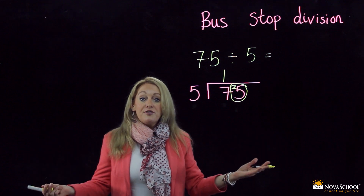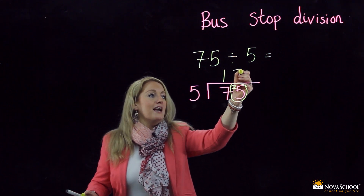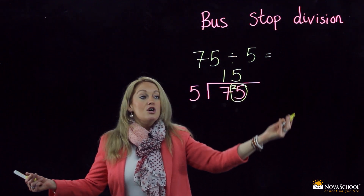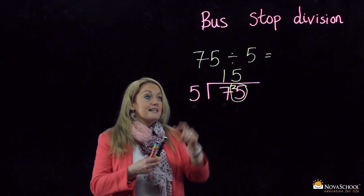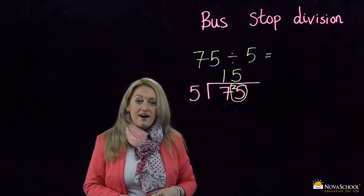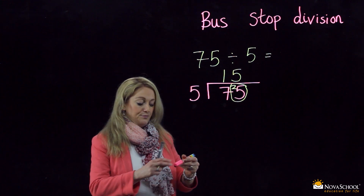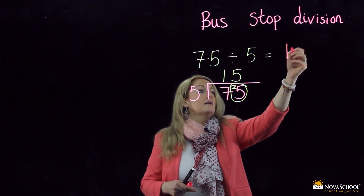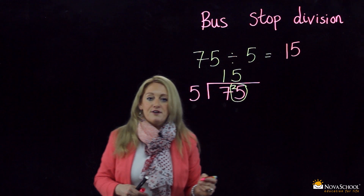Now I know my five times table. I know that five goes into 25 five times. Where do I put the five? Above my new number. So what's my answer everybody? 75 divided by 5 is 15.